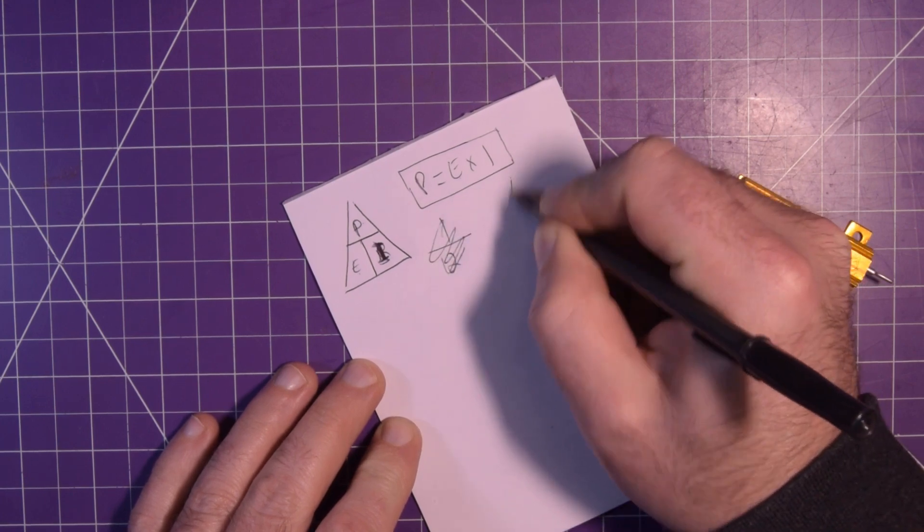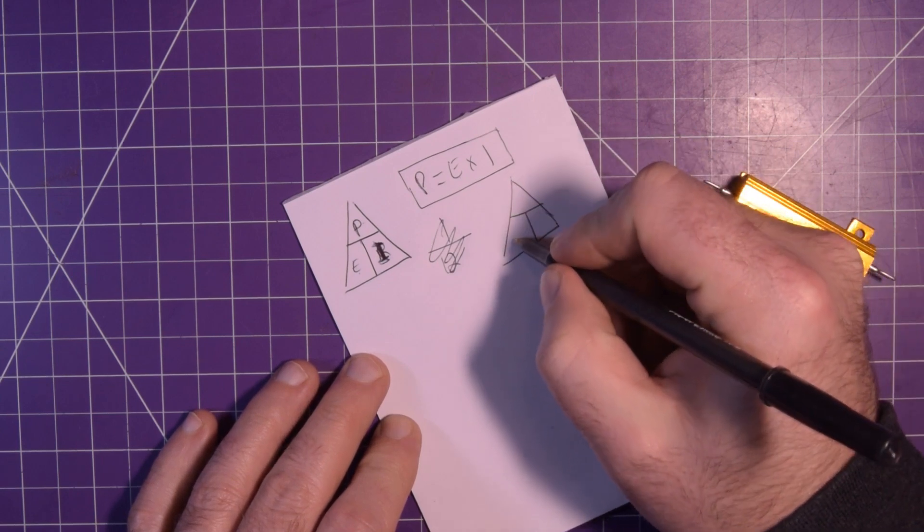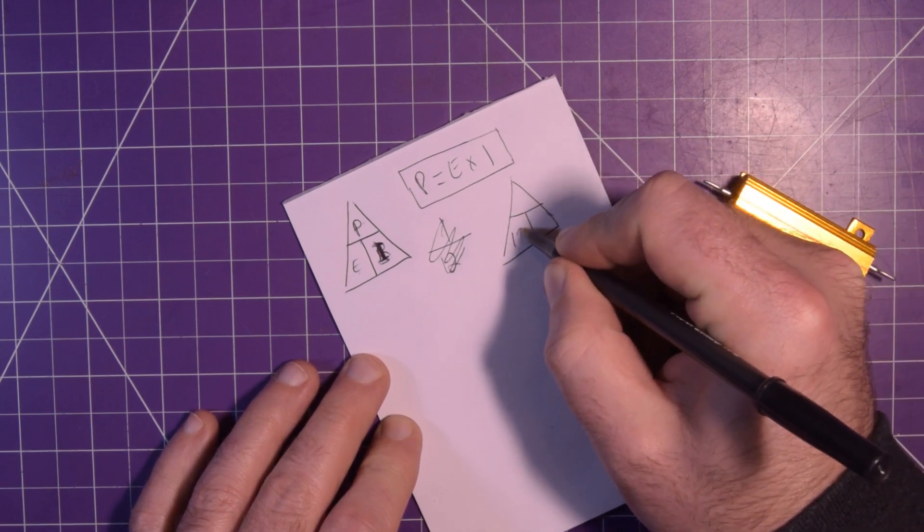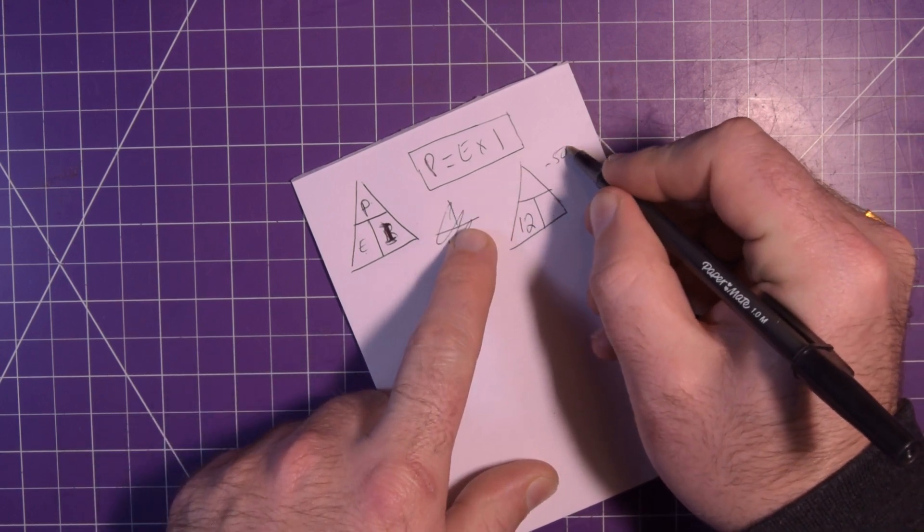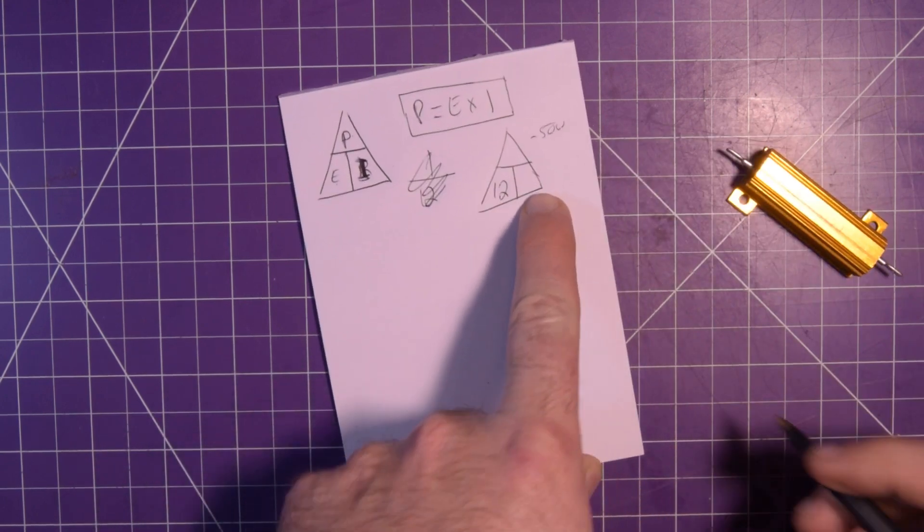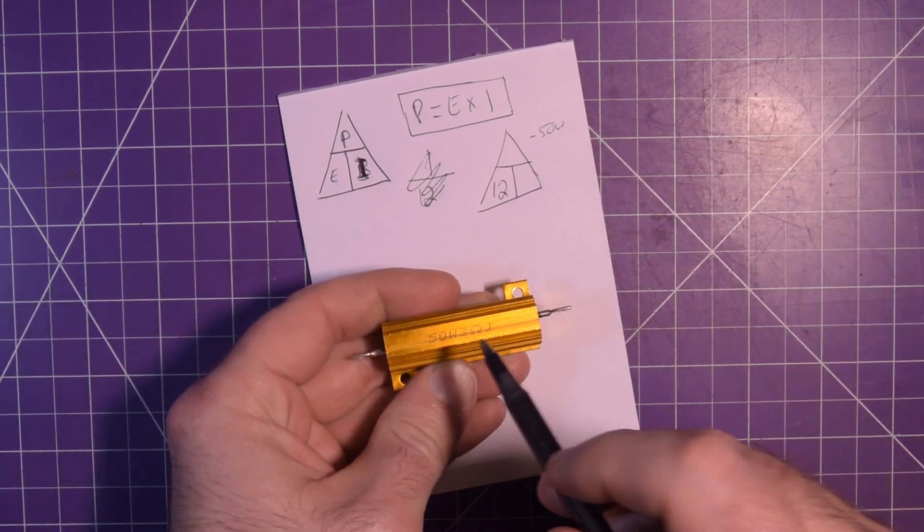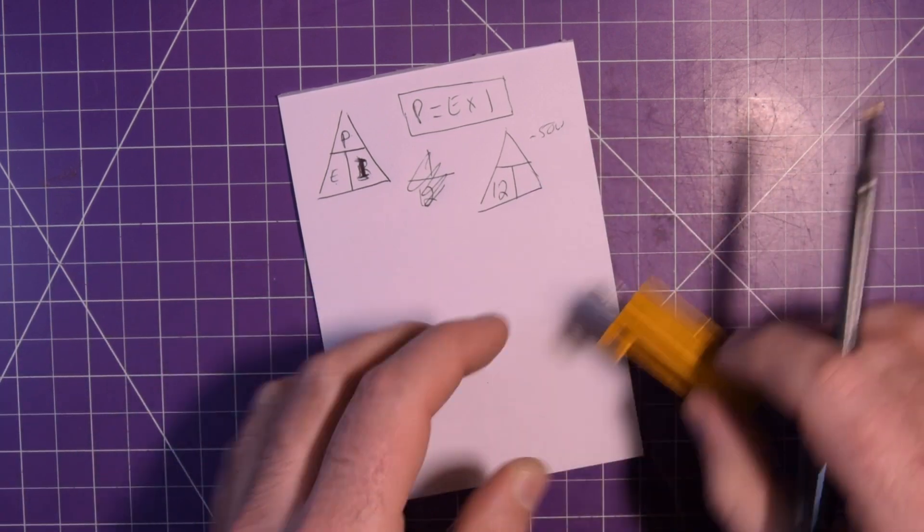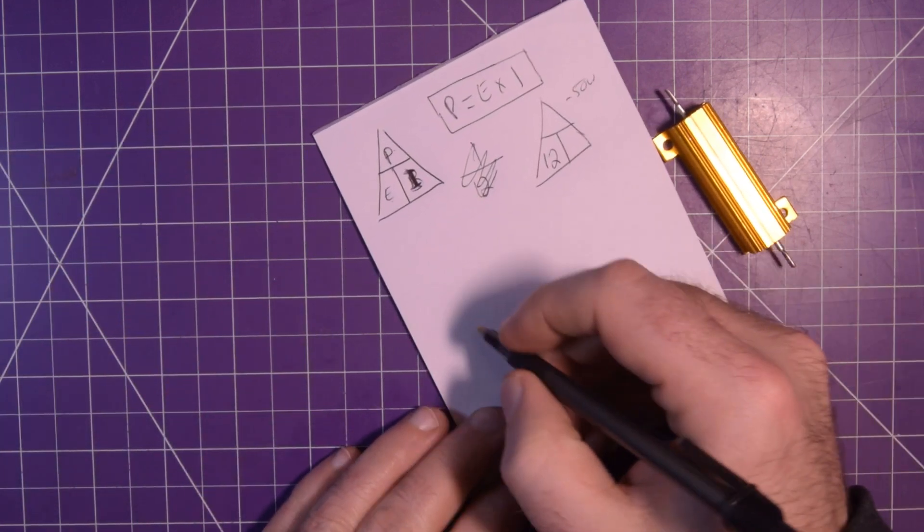So basically if we fill in this formula, we have like 12 volts here. What am I doing? Draw the f***ing triangle. All right, so we have 12 volts here and we want to know if we can get up close to the 50 watt mark.